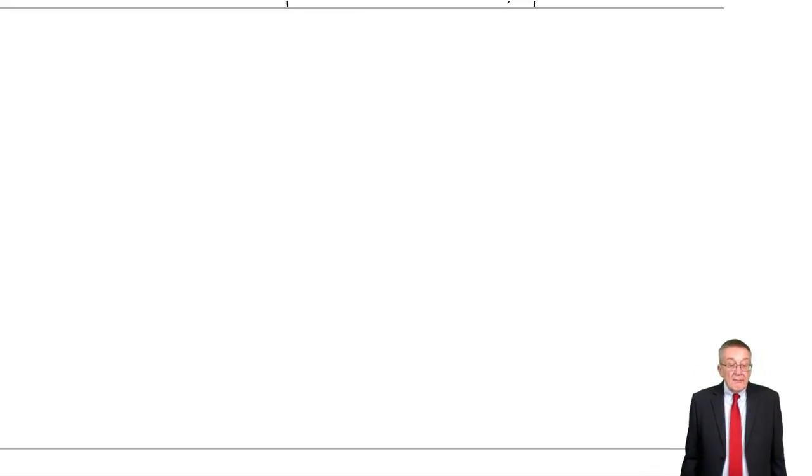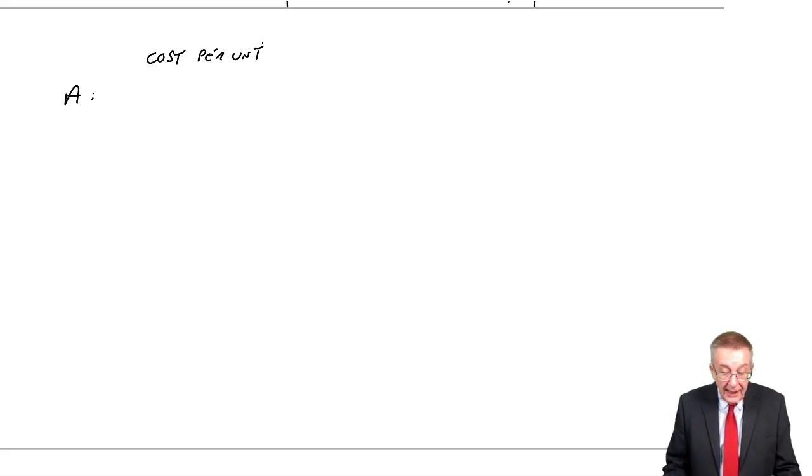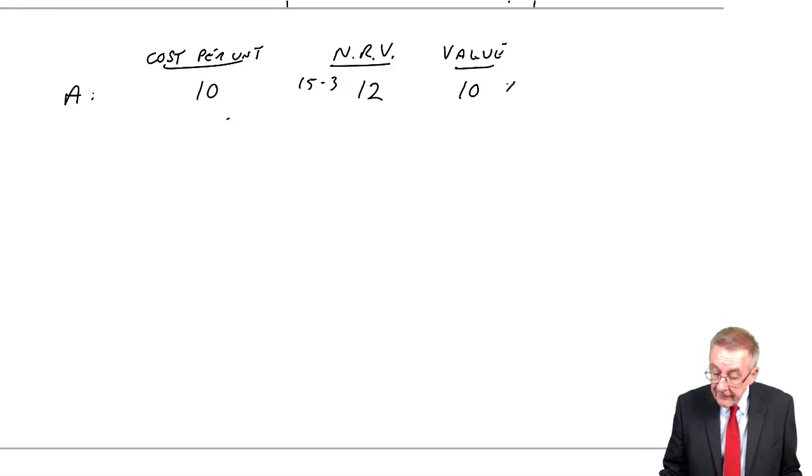Example four. Closing inventory as follows. We have three different products. A with 100 units. The cost per unit, PU is per unit. So far is $10. So there's the cost. It's how much you've spent so far. There are going to be further costs to be incurred. And the final selling price per unit is $15. So the net realizable value, $15 less these extra costs we're going to have to spend, 15 minus 3 is $12. And so they'll be valued at the lower of the two, $10. In total, since there are 100 units,